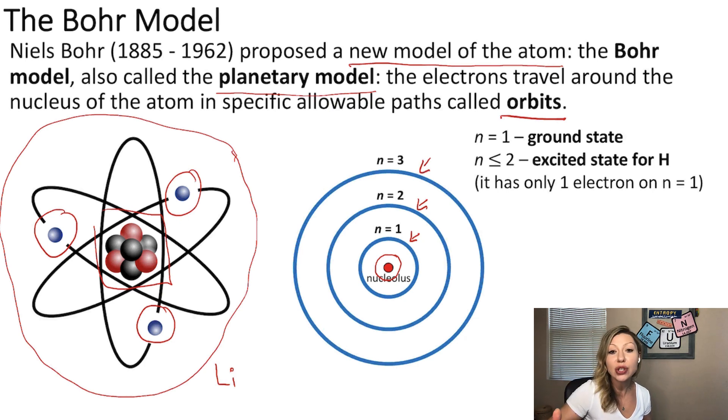For the hydrogen atom, since we have only one electron there, N equals 1 is going to be the ground state, the coziest state where the electron likes to live. And all the other states where the electron can jump up if it gets extra energy is called the excited state.